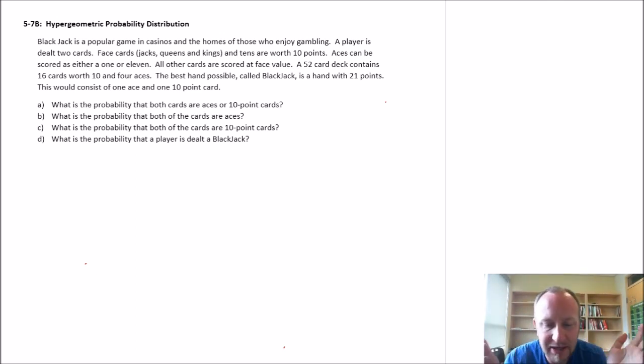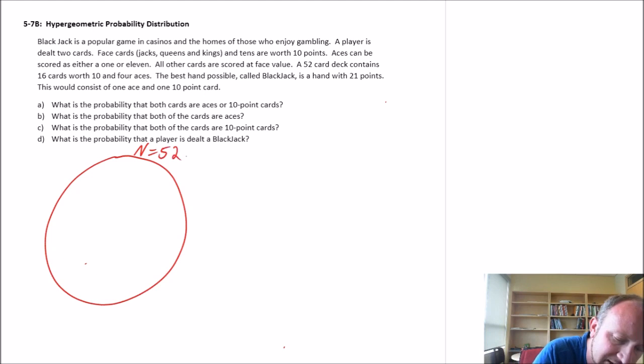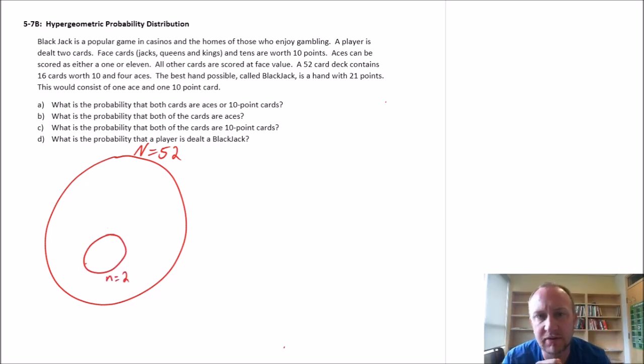Here we have a common game at home and casinos. The way the game works, you have a deck of cards, 52 cards in the deck. Each player is dealt only two cards. So here we have already some parts of our problem. We have our population, a population that consists of 52 cards. Each player is dealt two cards. So there's our sample. We have a sample N equals just two cards from that deck.